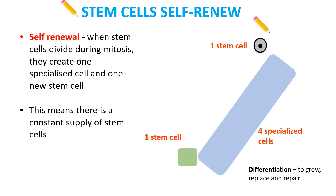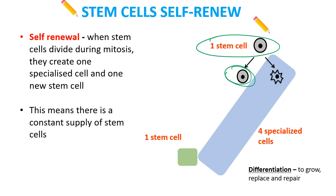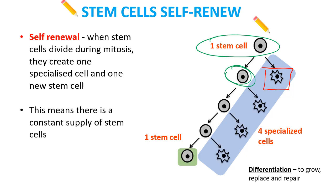The most important thing for our bodies is that we have a huge supply of stem cells so we can constantly repair and make new cells for all our different types of tissues. That's the idea of self-renewal — when stem cells divide during mitosis. Starting with one stem cell going through mitosis, we get two daughter cells, but one stays as a stem cell and the other becomes specialized, like a skin cell. That stem cell then divides again, and again.